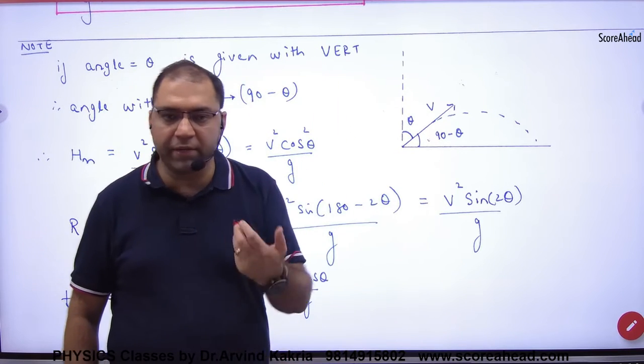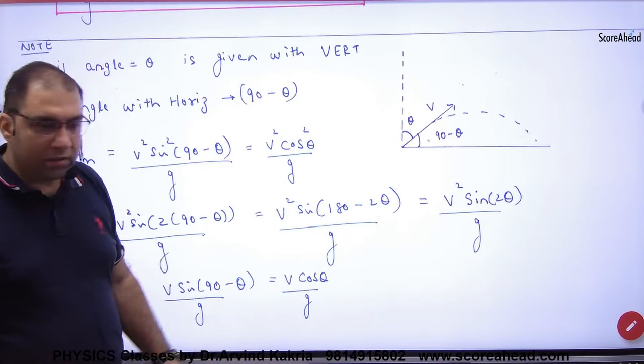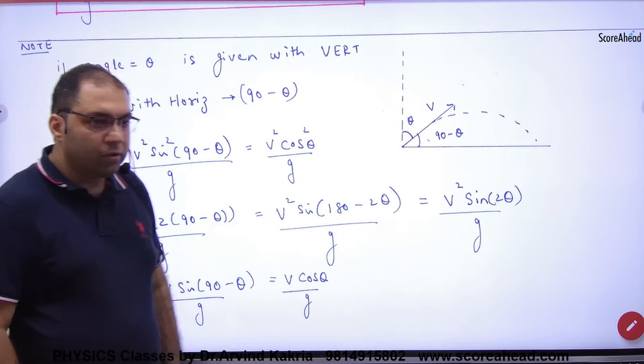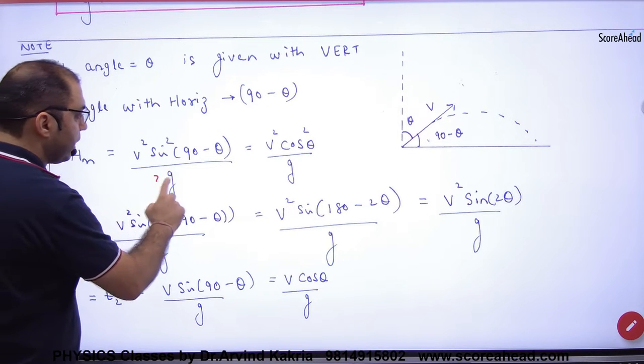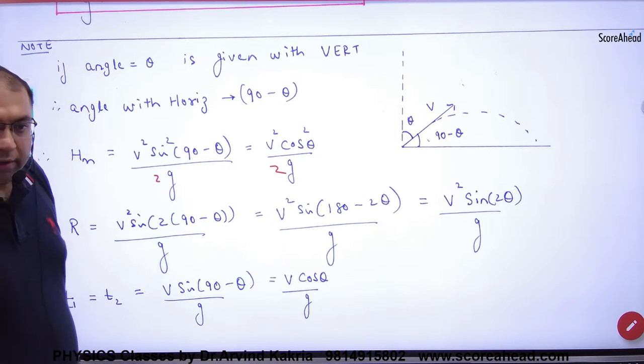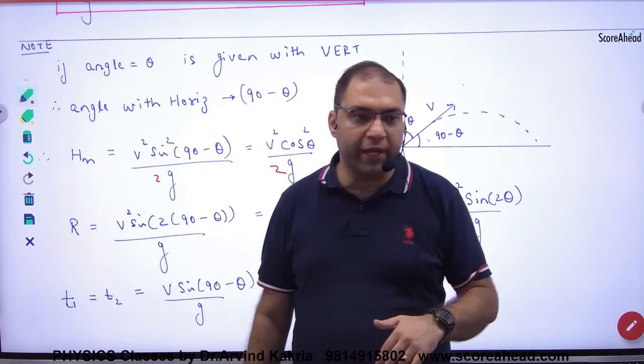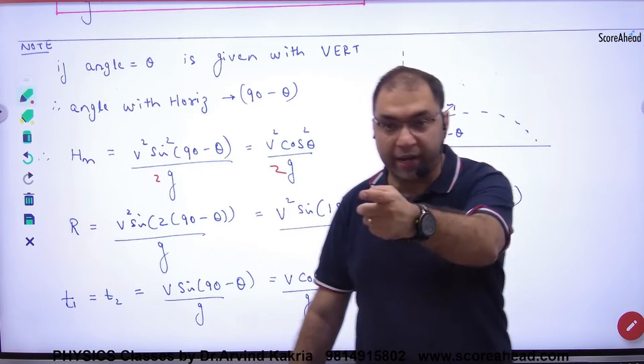What do we do in this case? We remember the formula. What is the maximum height? V square sin square theta divided by 2g. But the formula is used when the angle is theta. In this case, the angle is 90 minus theta.